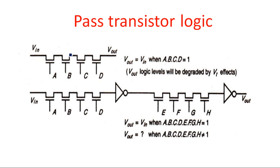Consider a series of four pass transistors with control inputs A, B, C, and D. The input V_in is applied and V_out equals V_in only when all control inputs A·B·C·D equal 1. If any one control input becomes 0, the output is 0.